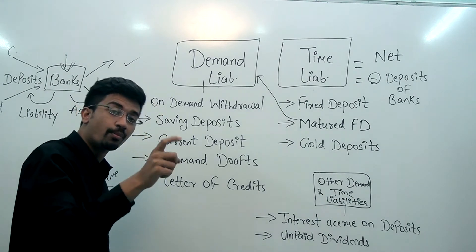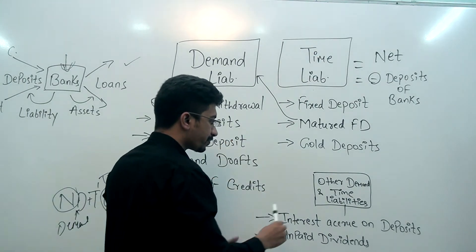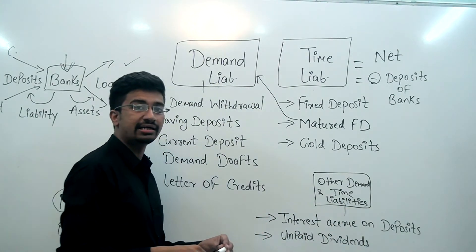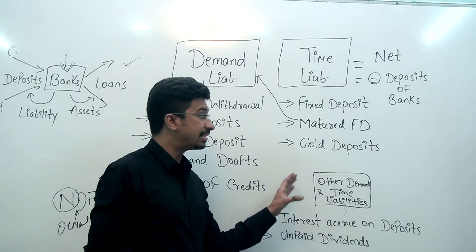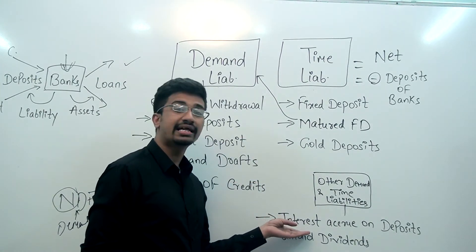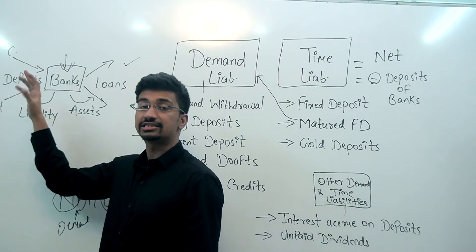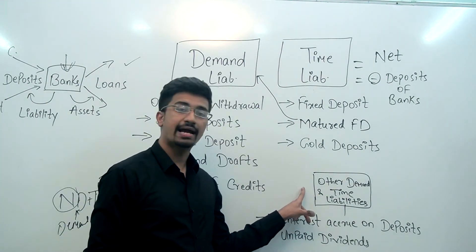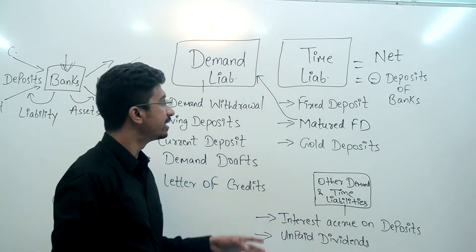Apart from these two, there is one more type of liability which we call ODTL — Other Demand and Time Liabilities. इनके अलावा, जैसे कि जो interest हो जाते हैं — जो deposit दिया उसपे जो interest देना पड़ता है bank को — वो हो जाता है Other Demand and Time Liabilities। वैसे ही unpaid dividends जो होते हैं, वो भी इसमें आते हैं।